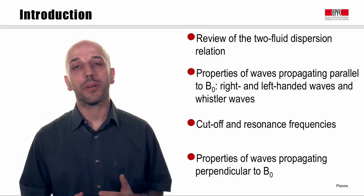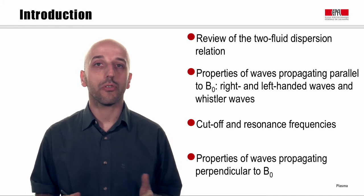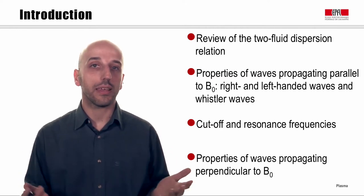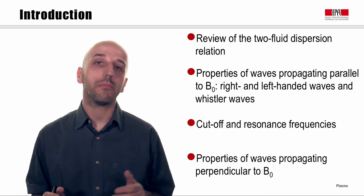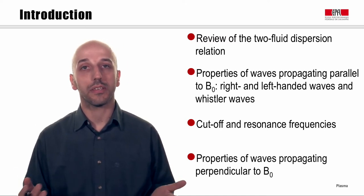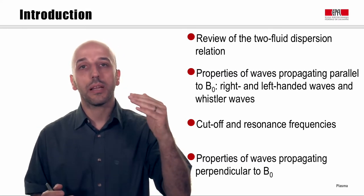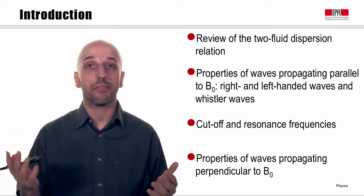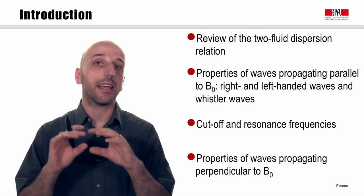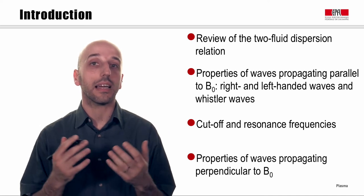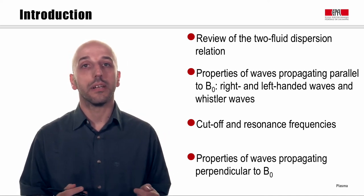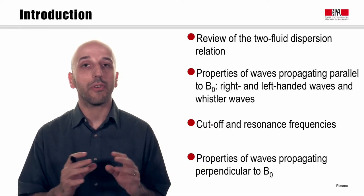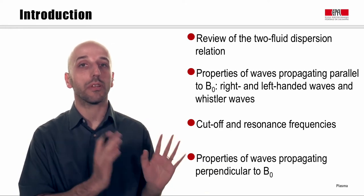Welcome to the Plasma Physics course of DPFL. In the past module we derived, within the two-fluid model, the intrinsic modes and waves present in a plasma. In the present module we will show the properties of these waves. We will start by looking at the properties of waves propagating parallel to the magnetic field — that is, right-handed and left-handed waves — and we will see that in a certain range of frequency an interesting kind of wave appears: the Whistler waves. This study will give us the opportunity to introduce the concept of cutoff and resonance.